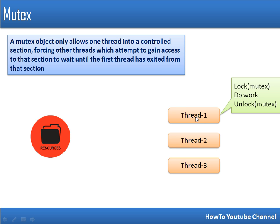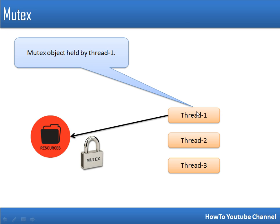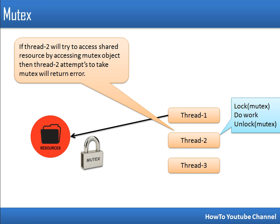All threads have the same code: they will first lock the mutex, do their work, then unlock the mutex. Thread one starts execution first. It locks the mutex — so this resource here represents a mutex object — it is now locked and thread one holds the mutex object and is doing its work. We can say the mutex object is held by thread one.